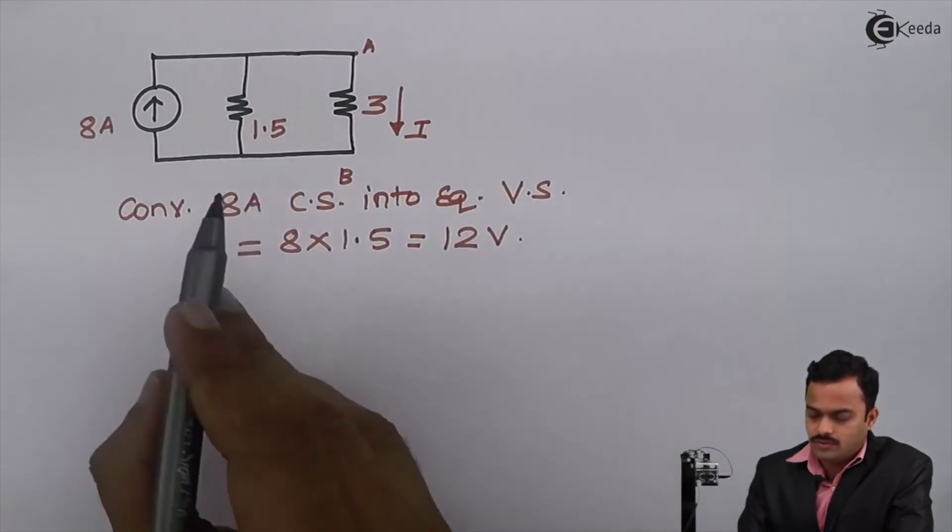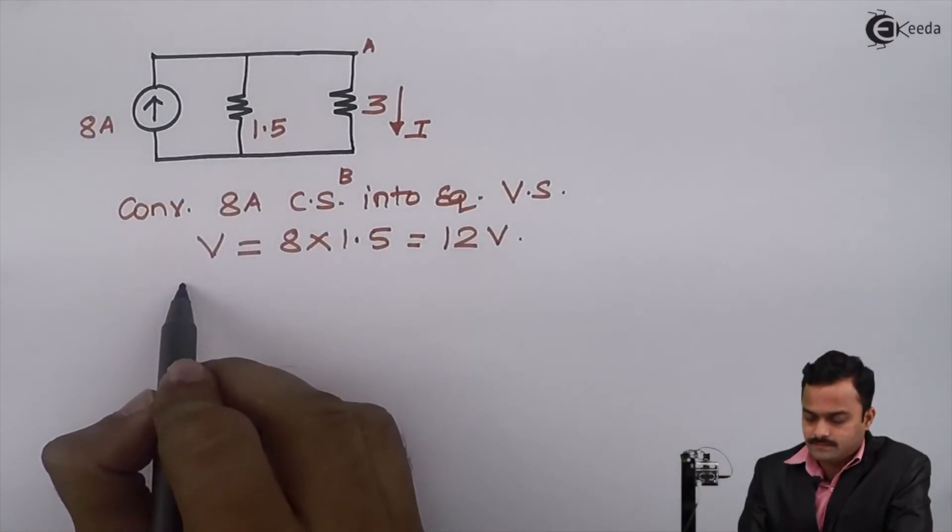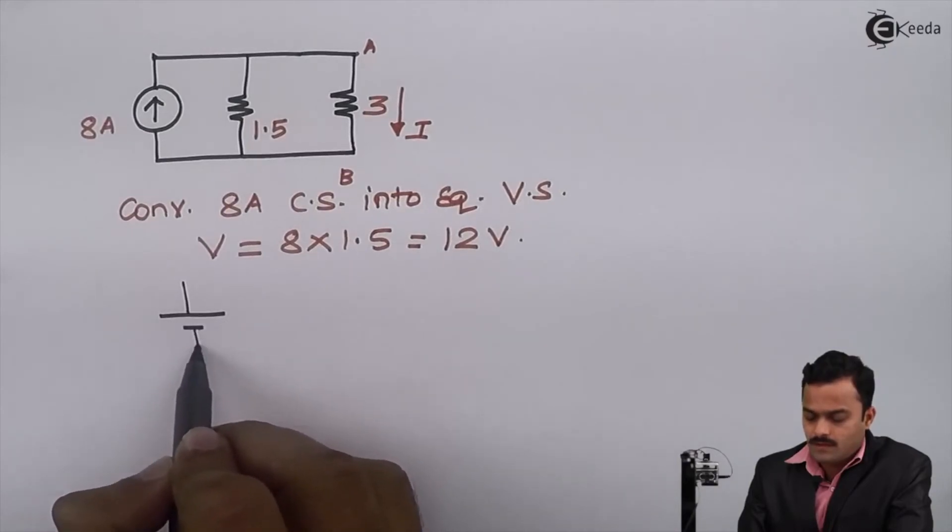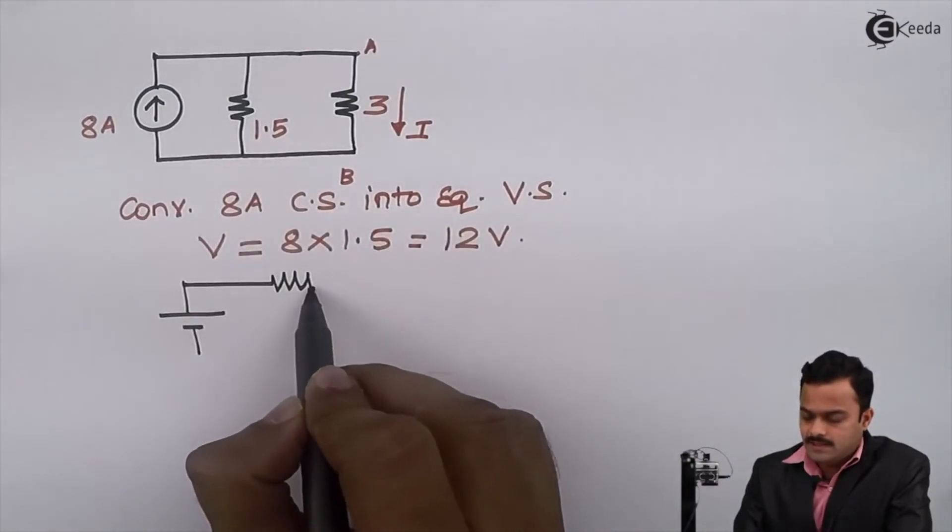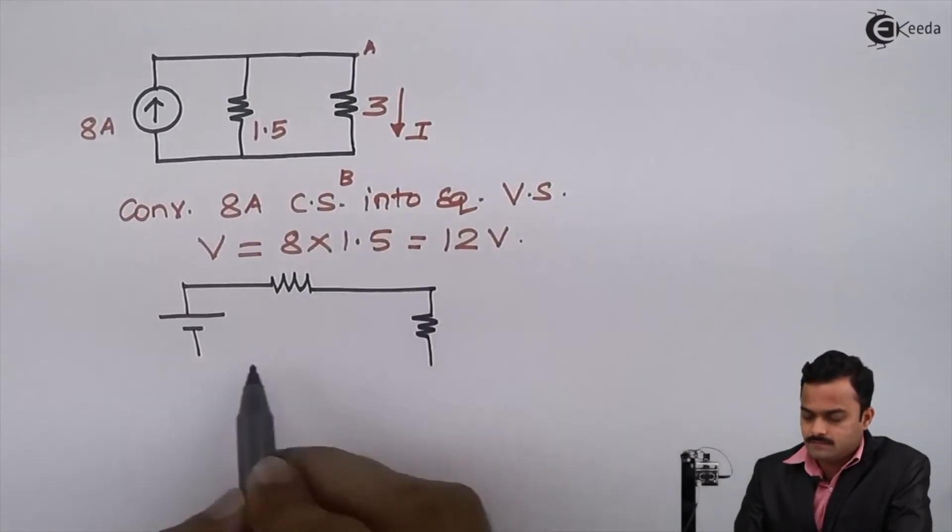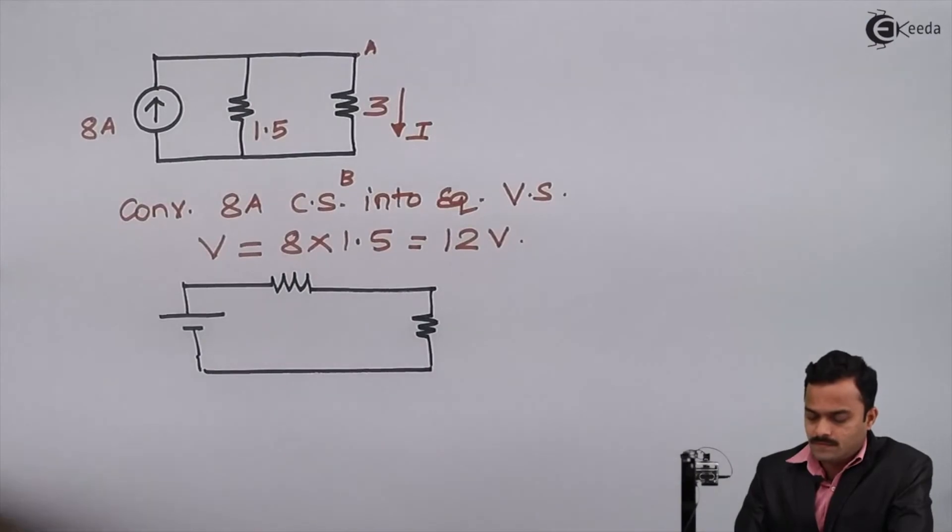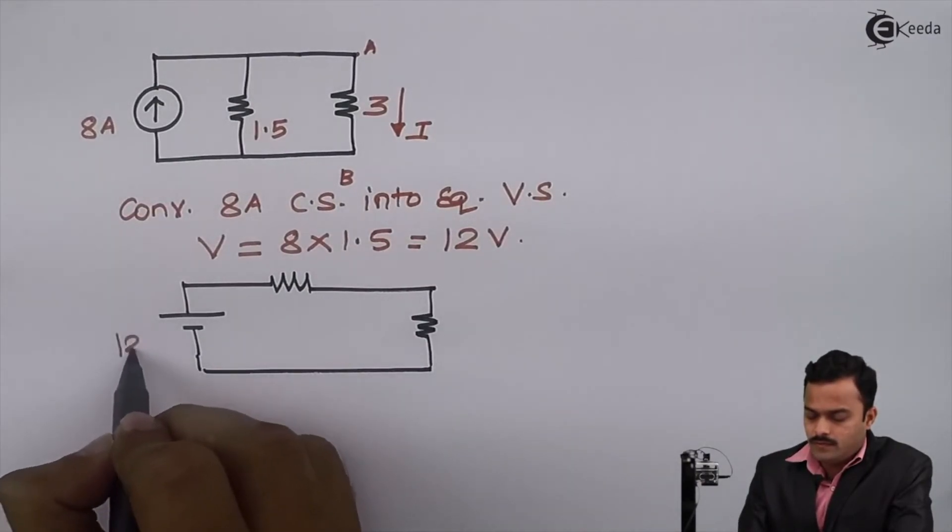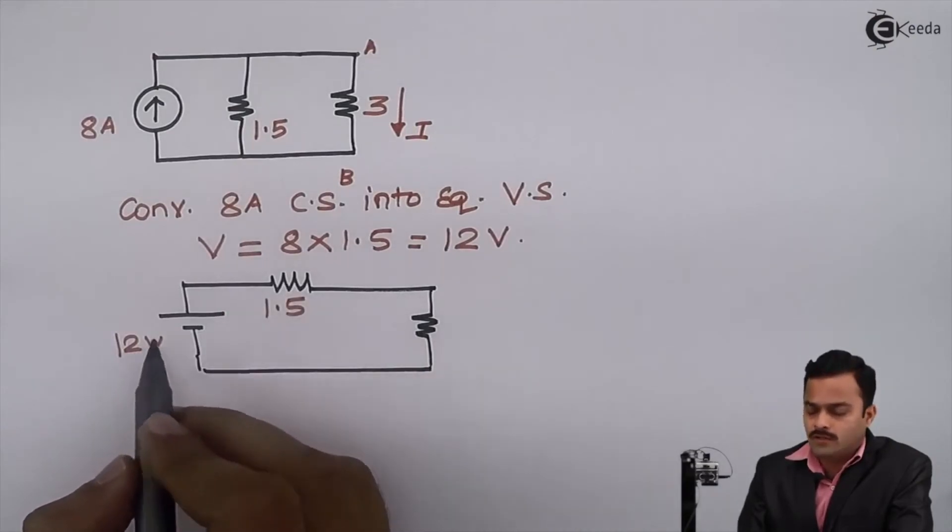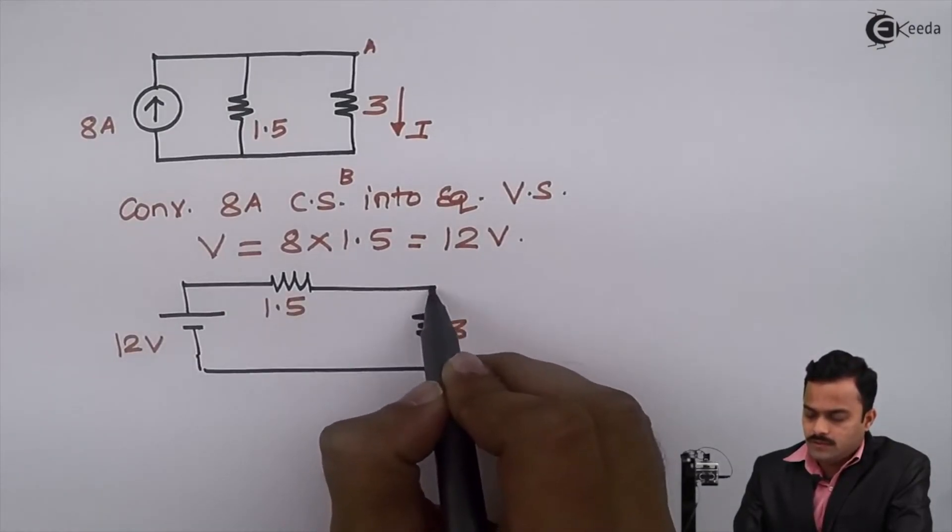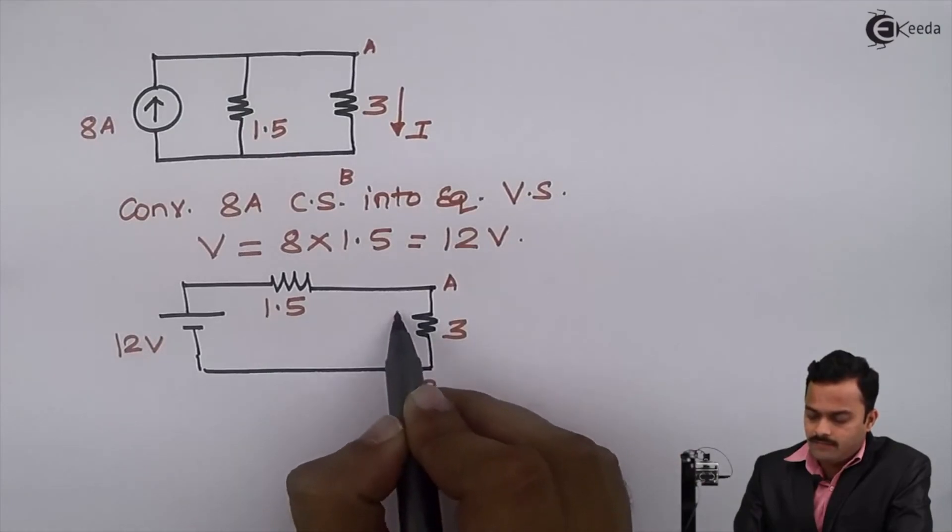So the circuit will be like this: I will have a voltage source and 1.5 in series with it. So 12 volt, 1.5 will come in series with 12 volt. 3 ohm is my load resistor, meaning I am supposed to find current flowing through it.